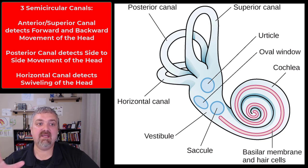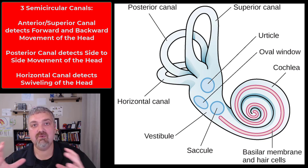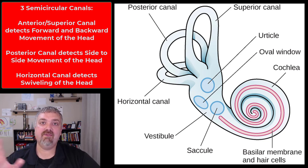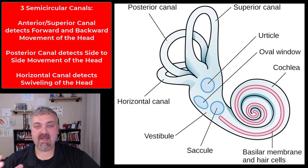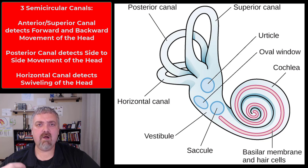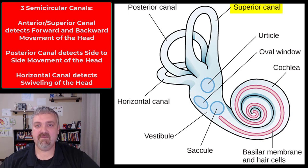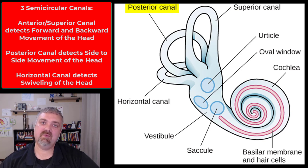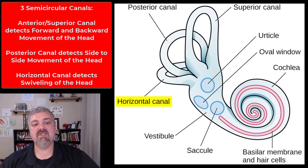The semicircular ducts in these canals have hair cells which respond to mechanical distortion by the fluid inside them. There are three semicircular canals in each inner ear: the superior, which is also called the anterior canal, the posterior canal, and the horizontal canal. The superior or anterior canal responds to a nodding of the head — moving forward and back. The posterior canal responds to tilting the head side to side, bringing your ear toward your shoulder. The horizontal canal responds to rotation, when you swivel your head from side to side.